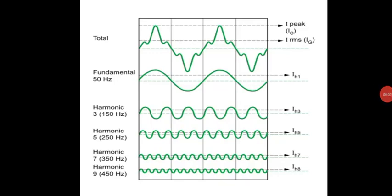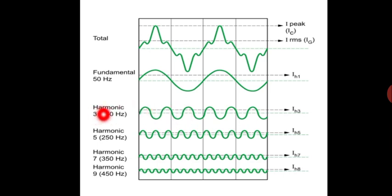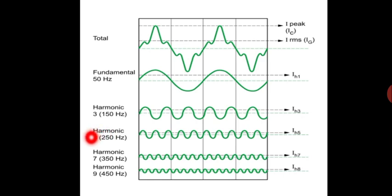Hello, welcome students. In this class we study about the effects of harmonics. As you already know, this is the fundamental wave and this is the third harmonic wave. Within one cycle, the total number of frequencies is three times the actual frequency — that is 150 Hz. Normally frequency is 50 Hz. The third harmonic frequency is three times the fundamental; fifth harmonic is five times, which is 250 Hz.